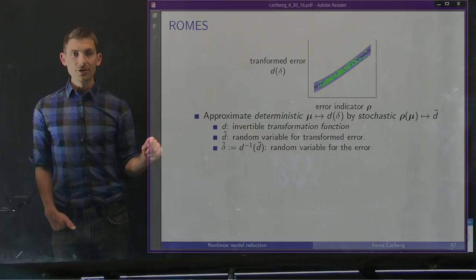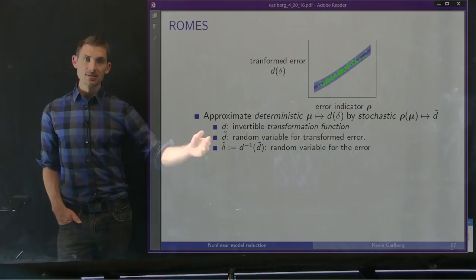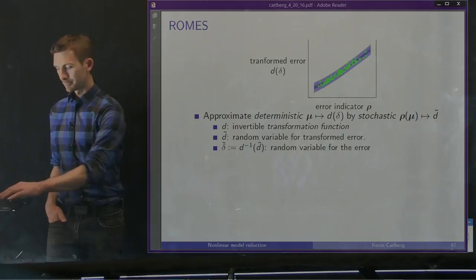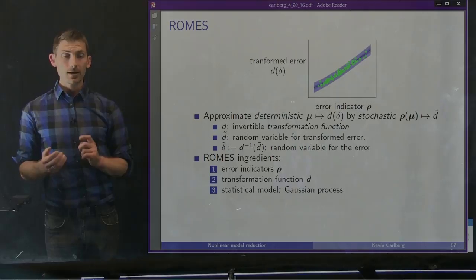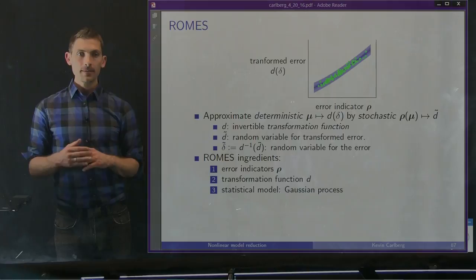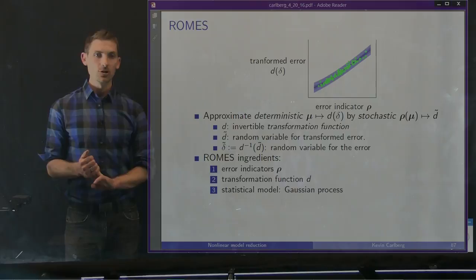D is an invertible transformation function. D-tilde denotes a random variable for the transformed error, and delta-tilde, which is D-inverse applied to delta-D-tilde, is a random variable for the error. The ingredients we need to define to employ the ROMS method are: first, what are the error indicators — what data does the ROM produce for building a mapping? Second, what's a good transformation function D? And finally, what statistical model should we use — and we're going to use the Gaussian process.